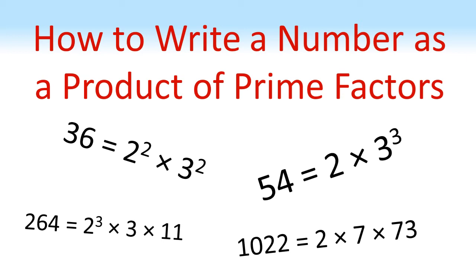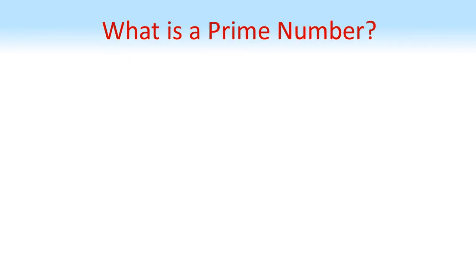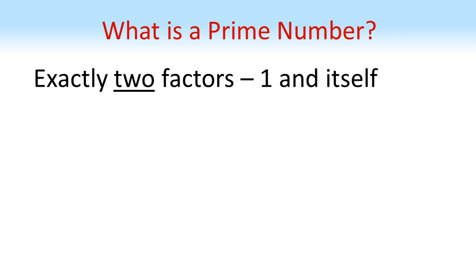How to write a number as a product of prime factors. Firstly, what is a prime number? So a prime number has exactly two factors, these being one and itself.